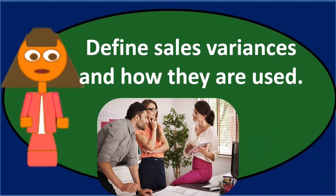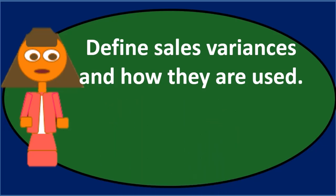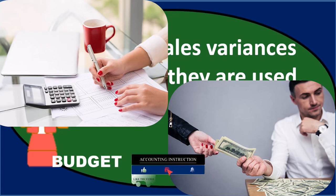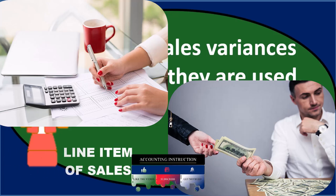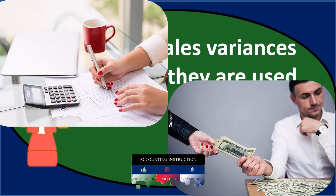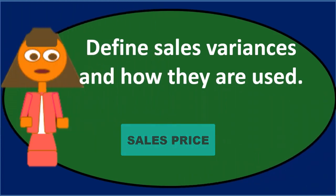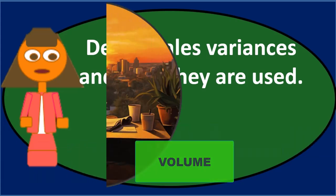Sales variances reflect differences in price and volume of sales from expected amounts. If we think of a budget, we have what the budget was and then what actually happened. The difference in terms of the sales line item is the difference between budgeted sales versus actual sales. However, we can break that difference down into more detailed components — at least two things are involved. One is a difference in the sales price that was budgeted versus the actual sales price. The other is that the volume was different — we sold more or less than we expected.